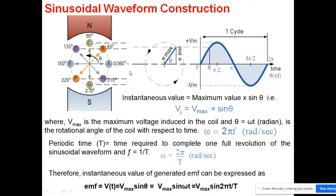The mechanical angle is when one revolution of the coil starts from a particular point, moves around, and completes its revolution back at point A again. This type of rotation is known as the mechanical angle, and it is represented in mechanical degrees.